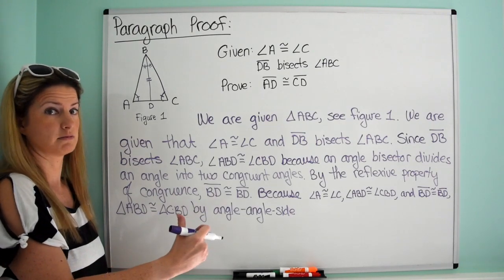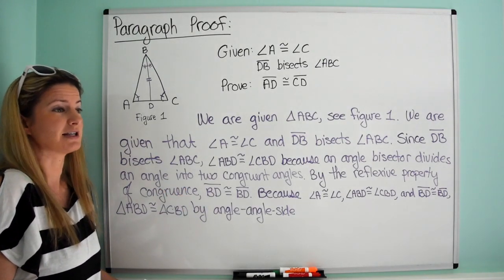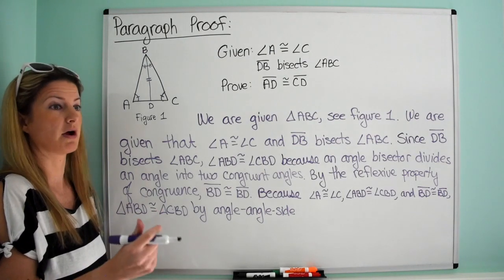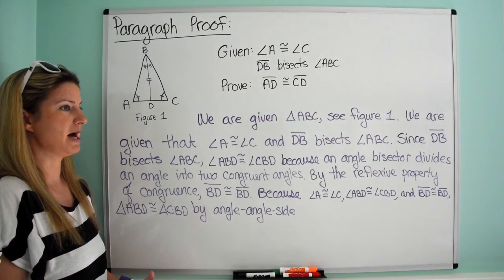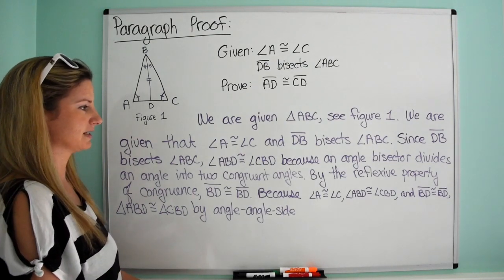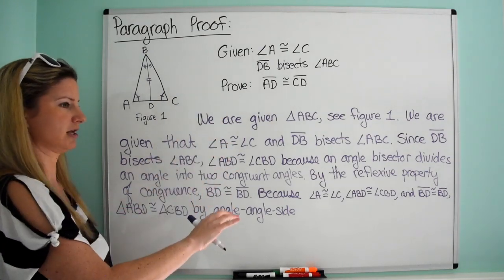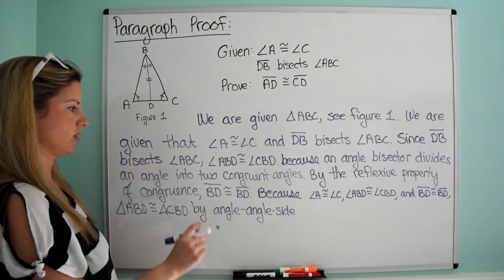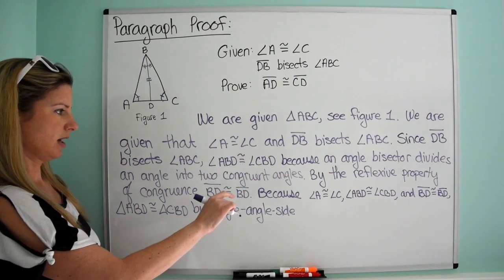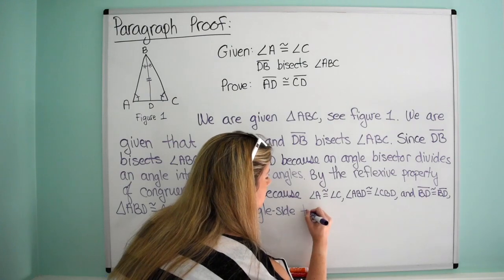I taught paragraph proofs, flow proofs, and told students on a test they could do any proof they wanted — flow, paragraph, or two-column. But I eventually worked mainly with two-column because it's more concise: here's what I can do and here's why, without worrying about all the words and how to list it. So we finish with 'by angle-angle-side triangle congruence.'